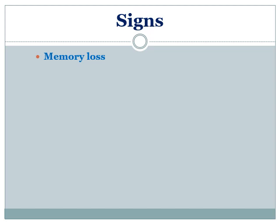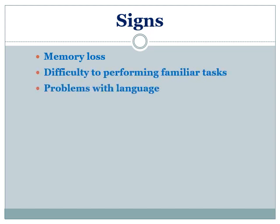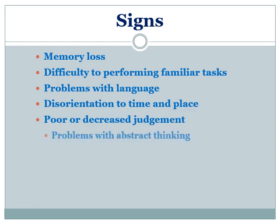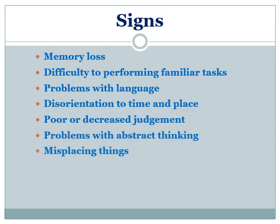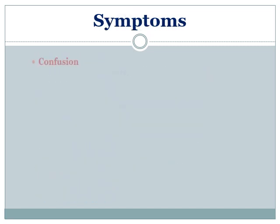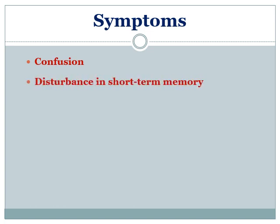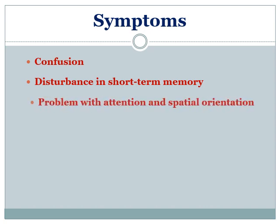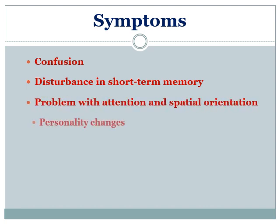There are a number of signs of Alzheimer's disease, including loss of memory, difficulty performing familiar tasks, problems with communication, disorientation to time and place, poor judgment, problems with abstract thinking, misplacing things, changes in moods and behaviors, changes in personality, and loss of initiative. The symptoms include confusion, short-term memory loss, problems with attention and spatial orientation, alterations in personality, difficulty in communication, and unexplained mood swings.